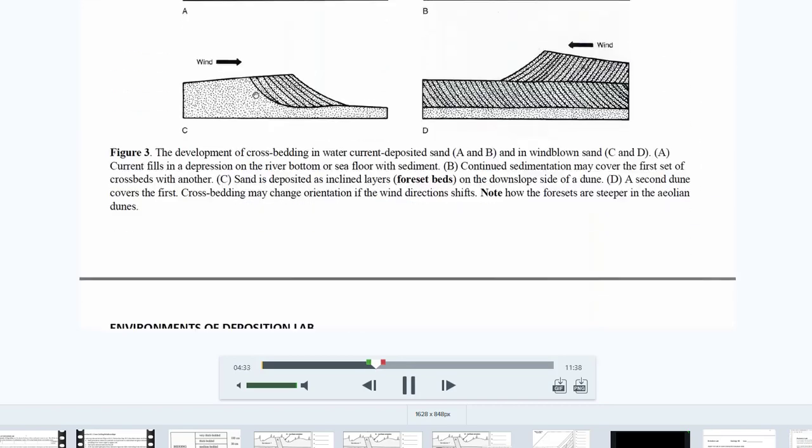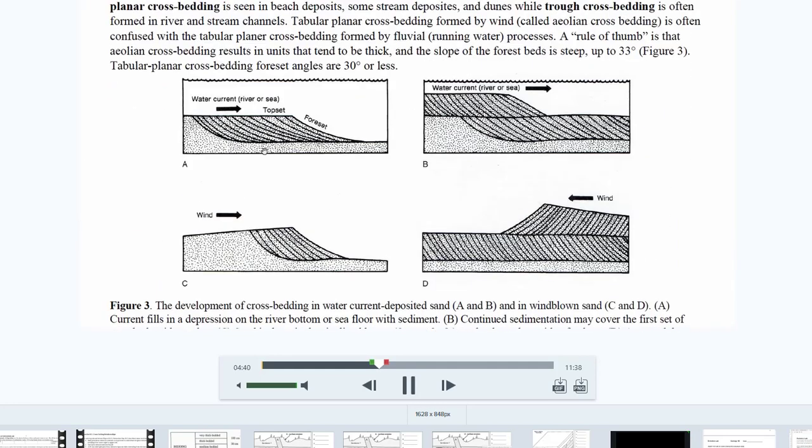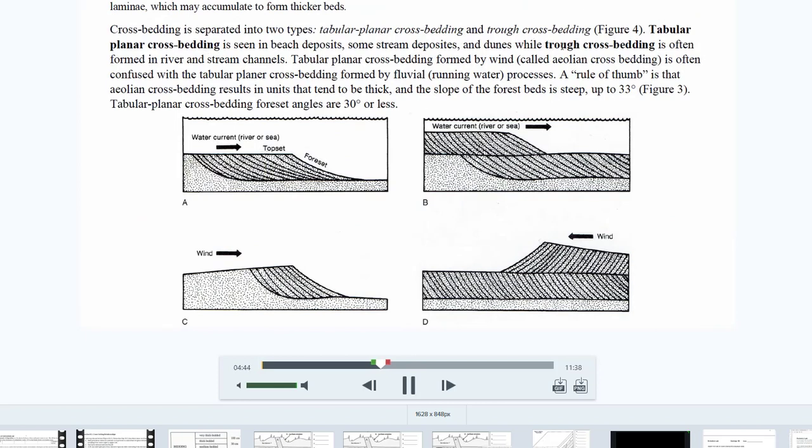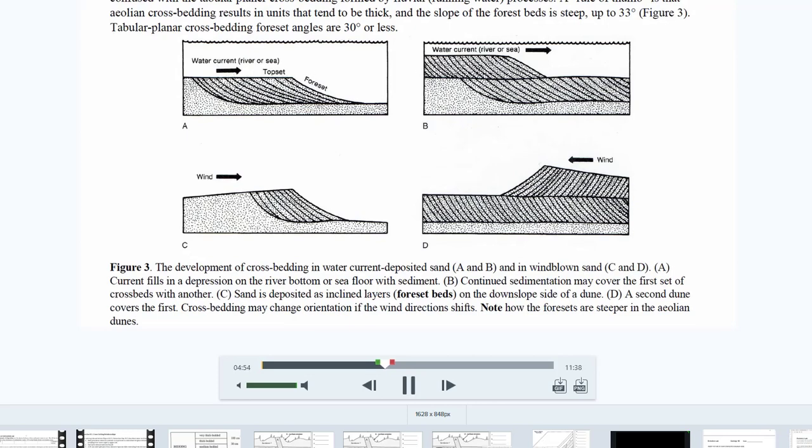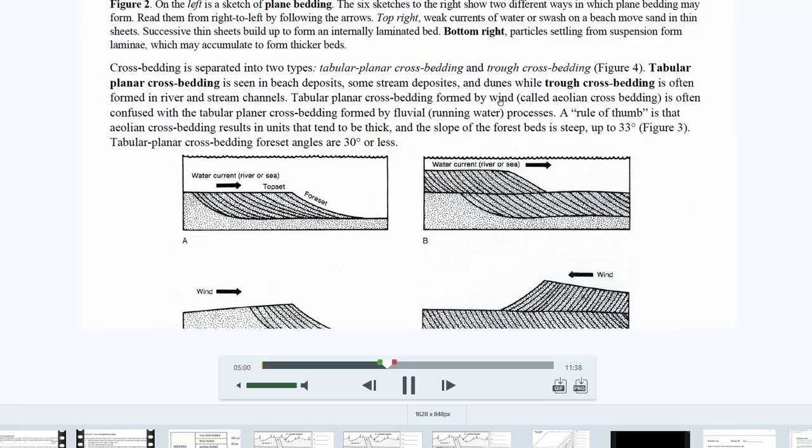And in this lab, we're going to differentiate between this tabular planar cross bedding. In fact, it's really called tabular planar cross bedding. And the other one's called trough cross bedding. And as far as I can tell, the tabular cross bedding is more common to wind deposits here. In fact, tabular cross bedding formed by wind is often confused with tabular planar cross bedding formed by fluvial process. So we can get it in both. We can get it in small streams and in big sand dunes, like in the desert or big coastal dunes.